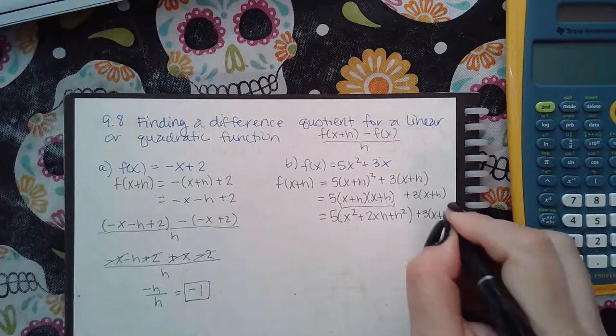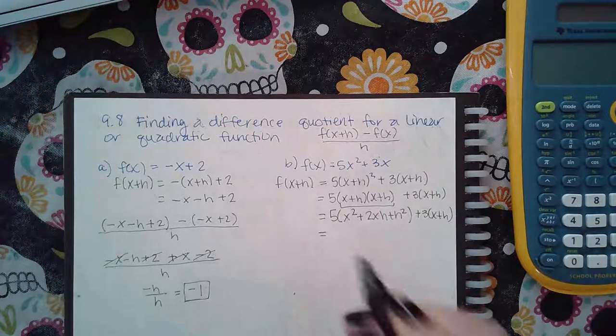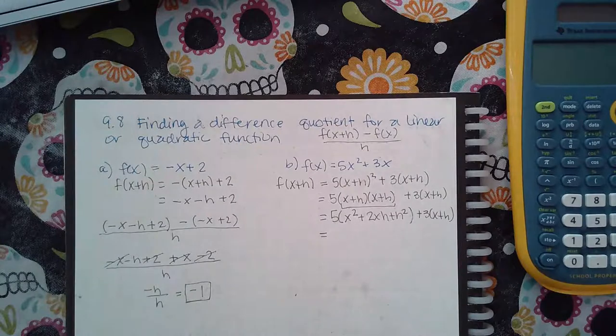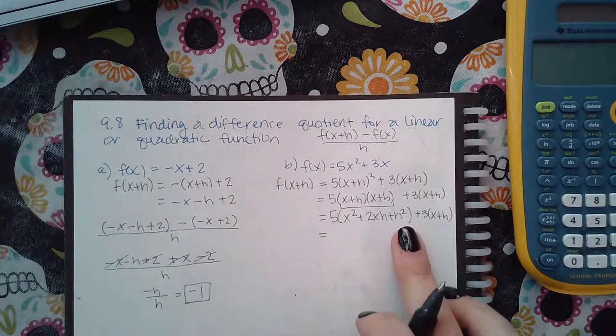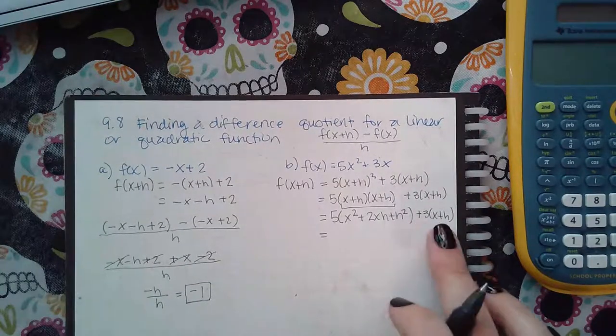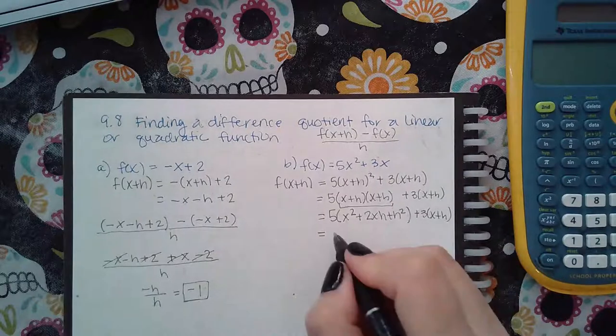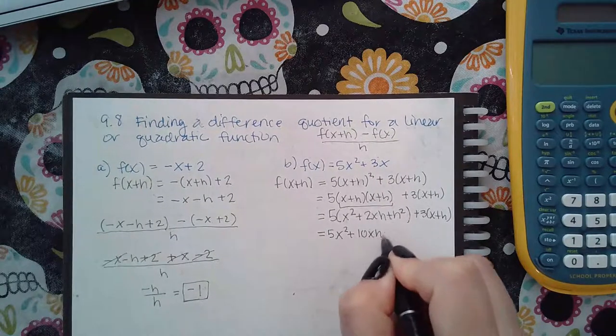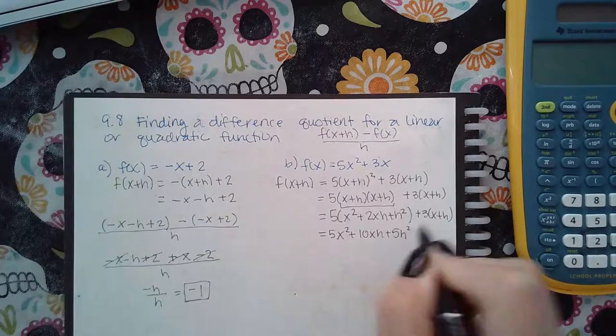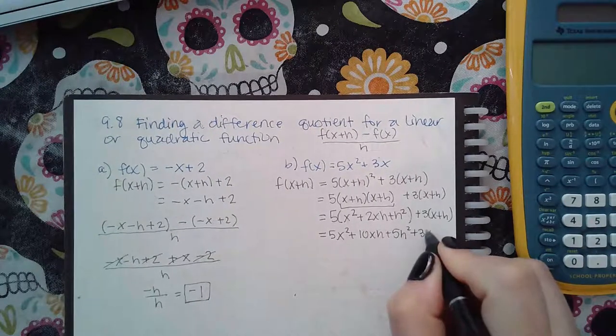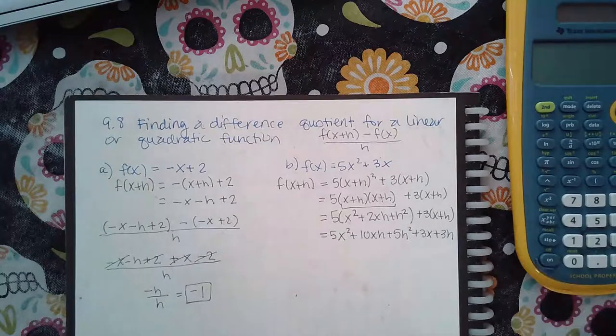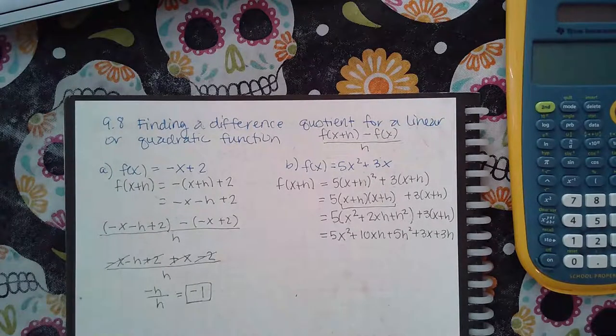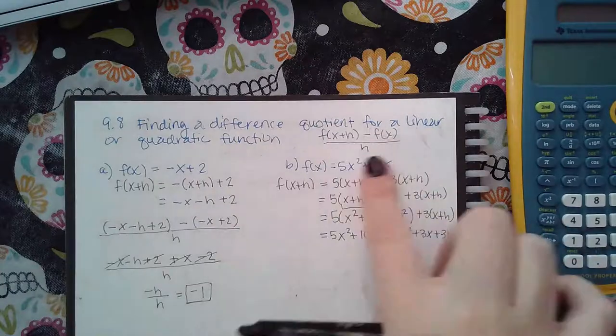Once I'm done finally applying that square, then I'm going to go ahead and multiply. And in this case, I'm distributing the 5 to these three terms and I'm distributing the 3 to these two terms. So I end up with 5x squared plus 10xh plus 5h squared plus 3x plus 3h. And now that it's all simplified, that is going to be the expression that I use when I'm writing the difference quotient.